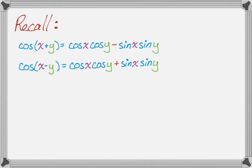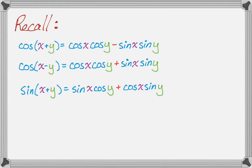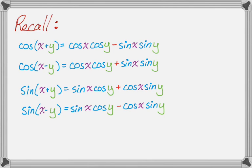For sine: sine of x plus y equals sine x cosine y plus cosine x sine y. The signs don't alternate, so it's plus and plus. And sine of x minus y equals sine x cosine y minus cosine x sine y. Those are the formulas you need to remember.